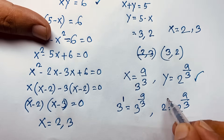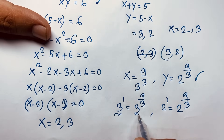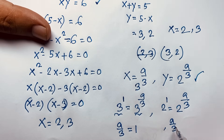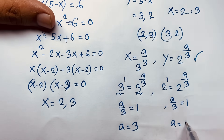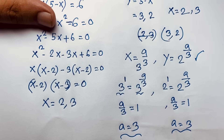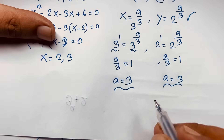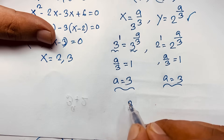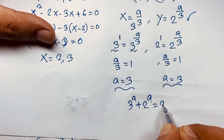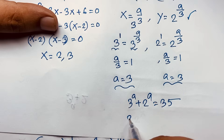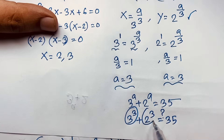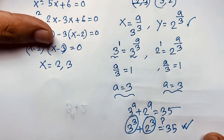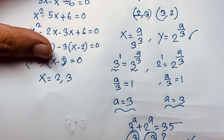Since the bases are the same, the exponents must be equal: a over 3 equals 1, so a equals 3. Our final answer is a equals 3. We can verify: 3 to the power 3 plus 2 to the power 3 equals 27 plus 8 equals 35. Thank you all — if you enjoyed this video, please subscribe for other interesting videos. Goodbye, take care.